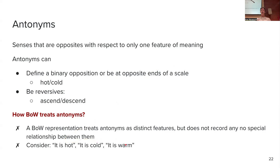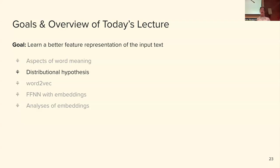Antonyms refer to senses that are opposites with respect to one feature of meaning — they define a binary opposition or opposite ends of a scale, like hot and cold, or reversives like ascend and descend. Bag-of-words treats antonyms exactly as it treats synonyms: just two distinct features, communicating nothing about them being opposite senses. Consider 'it's hot,' 'it's cold,' and 'it's warm' — the three feature vectors seem equally different from each other, yet 'hot' and 'warm' are more similar than 'hot' and 'cold.'